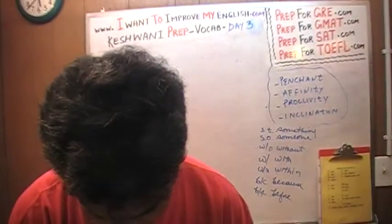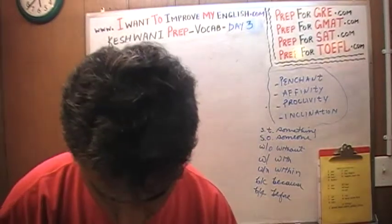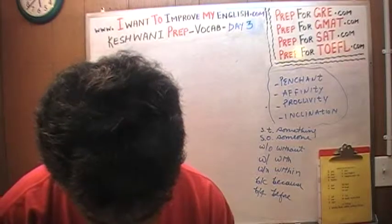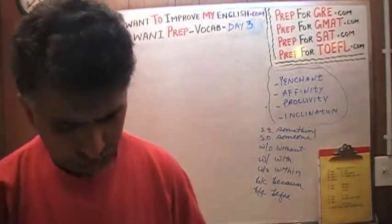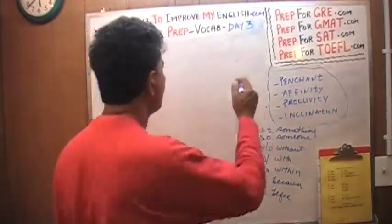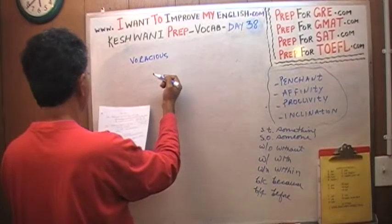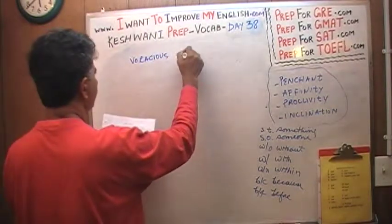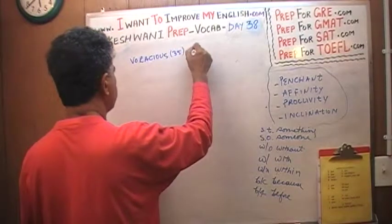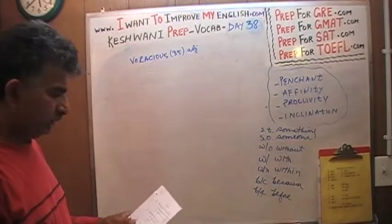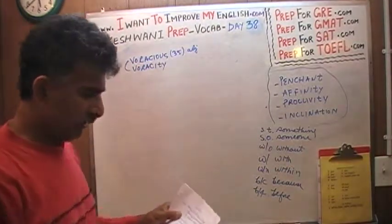Let's see what we have for today. On day number 35, we learned the word voracious. This is an adjective. On day 35 we also learned that the noun of voracious is voracity. V-O — voracity.